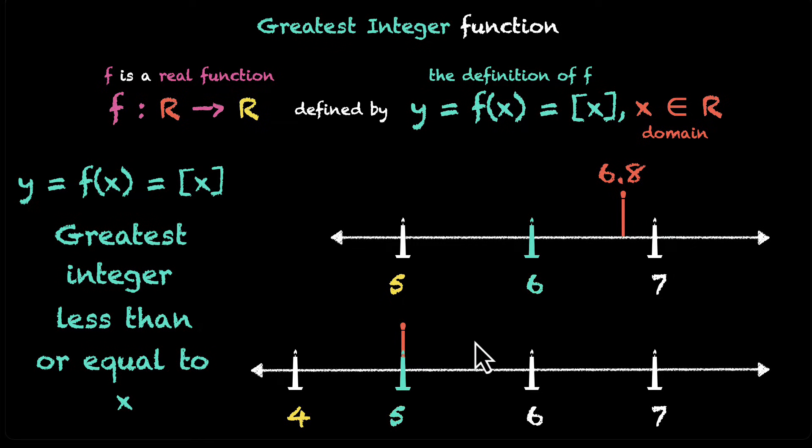The way I like to remember this is, this function rounds down to the nearest integer. Whatever you put in as the input, I'll round it down to the nearest integer. For 6.8, I'll not round up, I'll round down, I'll get to 6. If I'm at 6, I'll stay at 6. If I'm at 5.9, I'll go down to 5 and so on. That's how I like to think about it.